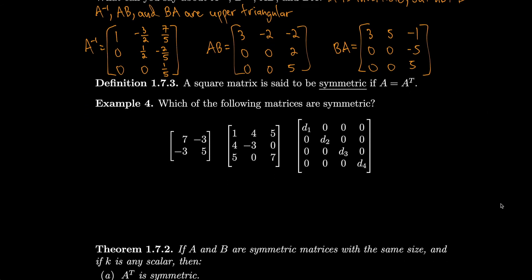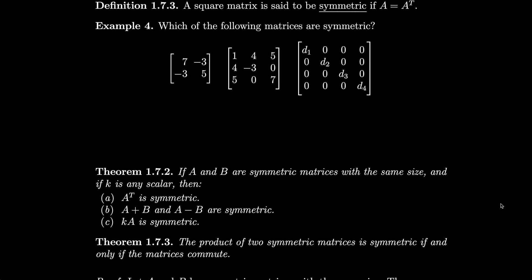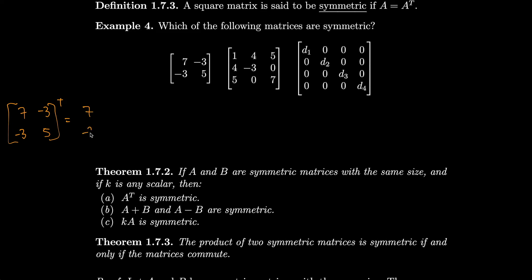A square matrix is said to be symmetric if A equals its transpose. To check the first example — the matrix with entries 7, −3, −3, 5 — we transpose it by interchanging rows and columns, and get the same matrix back. So that first matrix is symmetric.